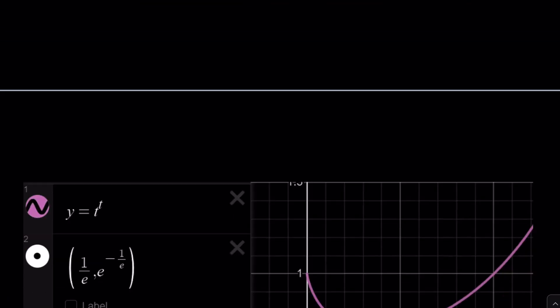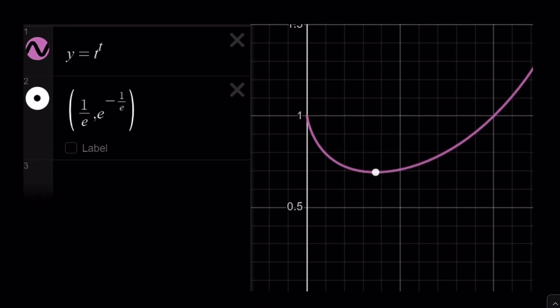Now the graph of t to the power t is as follows, and as you can see here, this is the value of 1 over e where the derivative is 0. So at that point we actually have, and you can plug it in to find what it is, 1 over e to the power 1 over e, basically, or e to the power negative 1 over e. That's the minimum point.